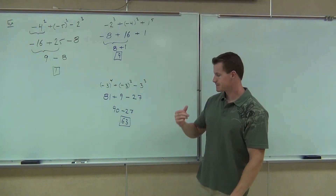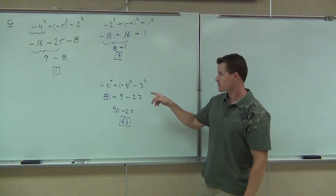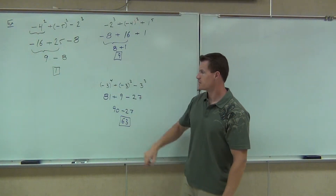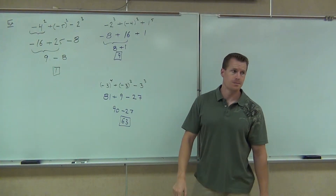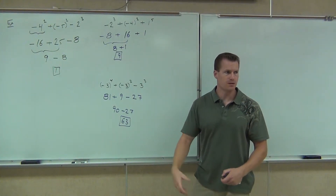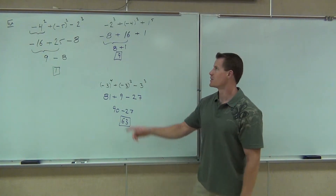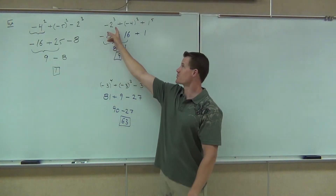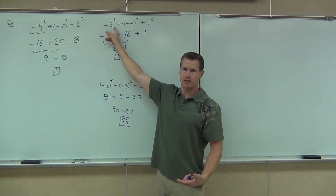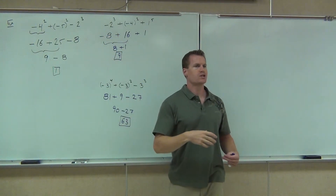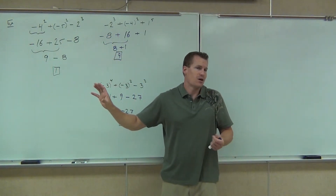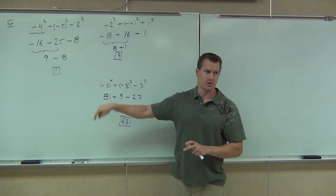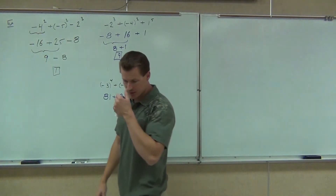Now, on the exponents — on the problem we're working on — if that was the first number, if it was negative 3 to the fifth or to the third, you'd always know it's a negative number because it's an odd exponent. You have an odd number of negatives. And that's what I was saying — in this case, this is kind of a weird case, because whether or not you have parentheses around that, you are going to get negative 8. Now I want you to understand the concept, but where people screw up is with the even exponent when you're not having the parentheses there. So good questions, everybody.